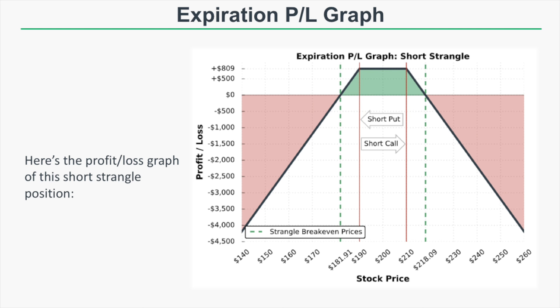For significant stock price moves in either direction, we have significant loss potential. If the stock falls to $140, we'd have a loss of around $4,000 per contract; if it rises to around $260, we'd also have a loss of around $4,000 per short strangle. While the short strangle is a great strategy when the stock stays in range, if the stock price explodes out of that range you have significant loss potential — especially on the upside. You need a very strict management plan for this strategy.